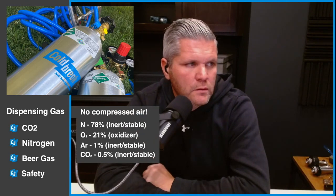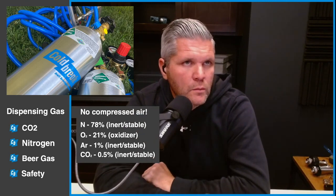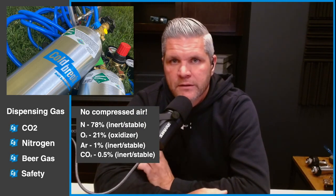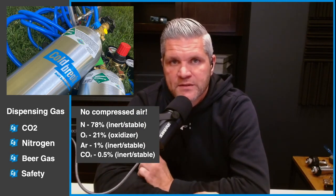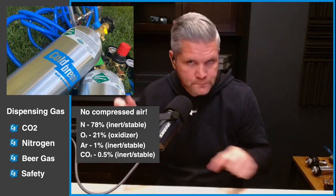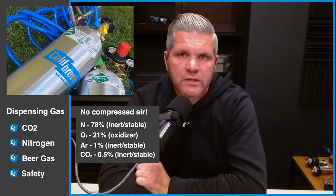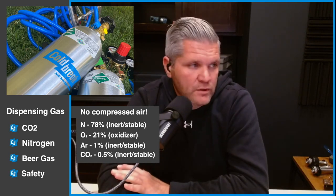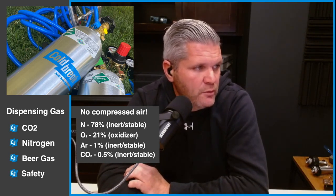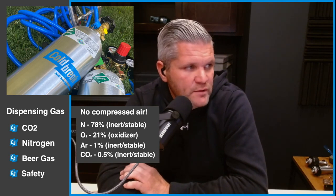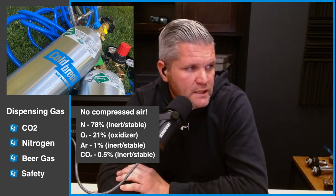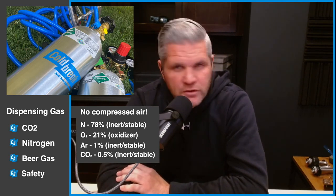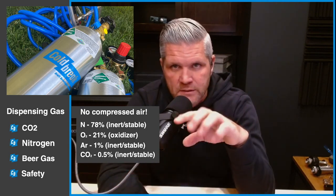When we talk about how we all probably learned how to get beer from a keg, it's with the hand pumps that you attach to it and you're forcing air into the keg. We don't want to do that because our breathable air is made up of 70% nitrogen, 21% oxygen, 1% argon, and a half percent of CO2, along with a couple of other smaller things.